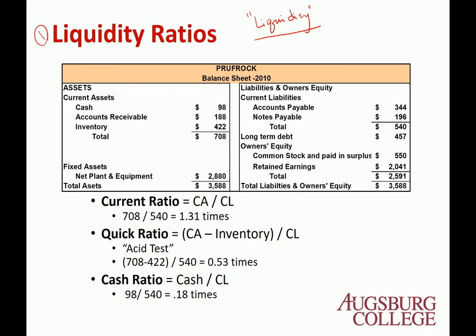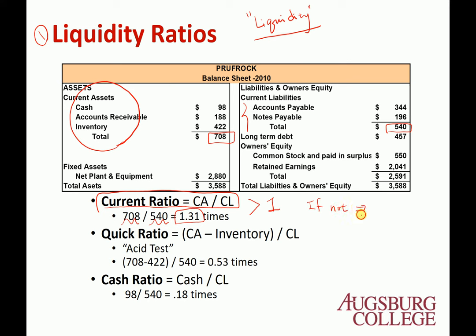Looking at the balance sheet, the current asset portion includes cash, accounts receivable, and inventory, and the current liability portion shows about $540 million to pay back within a year. Current assets are $708 million, so you have more current assets than current liabilities — that's a good sign. The first ratio is the current ratio: current assets divided by current liabilities, which equals 1.31 times. You want the current ratio greater than 1; otherwise, you may have a liquidity problem.